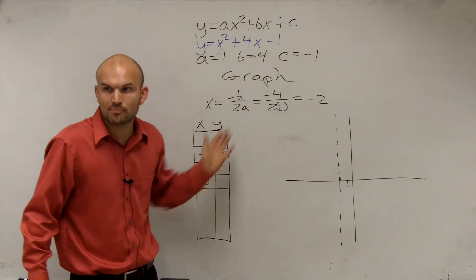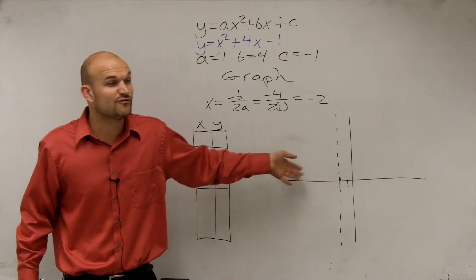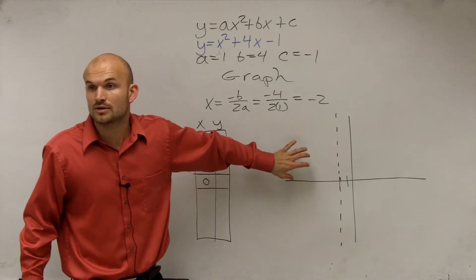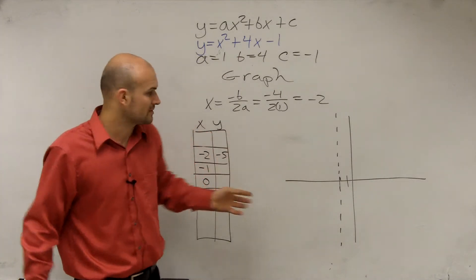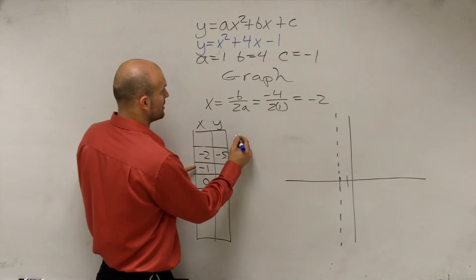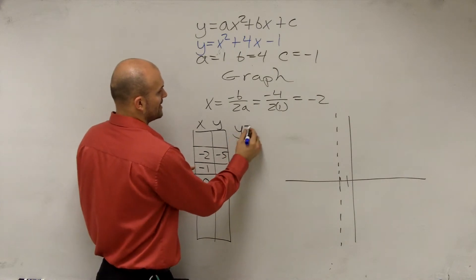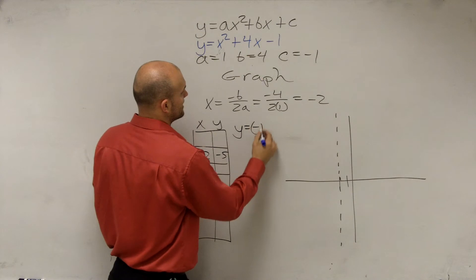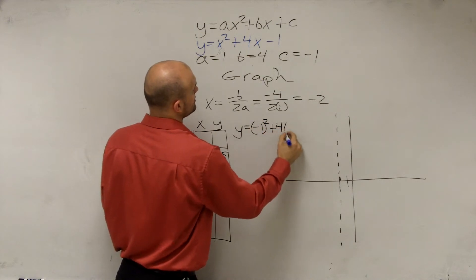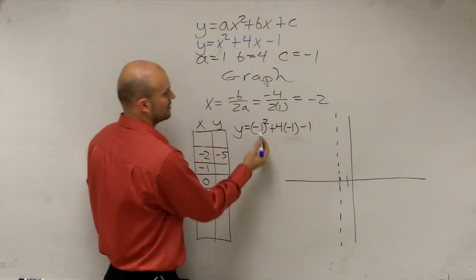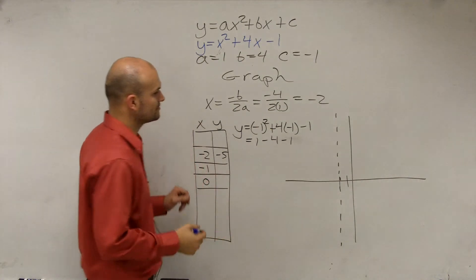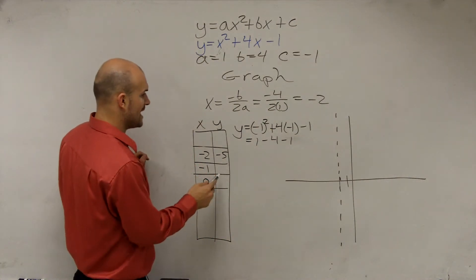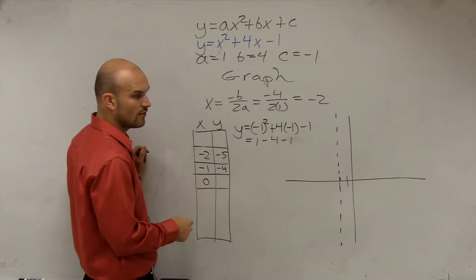Remember when we took negative 2, we plugged it into our equation? The first example I showed you, we plugged negative 2 into our function, and we got negative 5. Now, let's plug in negative 1. So you could say y equals, now you're going to plug in negative 1. Negative 1 squared plus 4 times negative 1 minus 1. Negative 1 squared equals 1 minus 4 minus 1. So now that's going to equal negative 4.